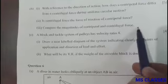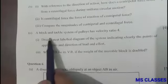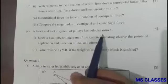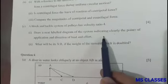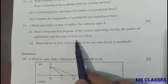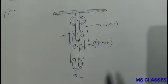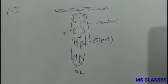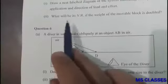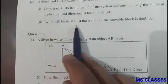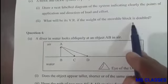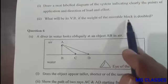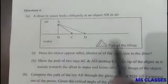Part (c): A block and tackle system of pulleys has velocity ratio 4. Draw a neat and clean diagram indicating clearly the points of application and direction of load and effort. This is the required diagram. Second part: What will be the velocity ratio if the weight of the movable block is doubled? There is no effect on it, so the velocity ratio remains same.